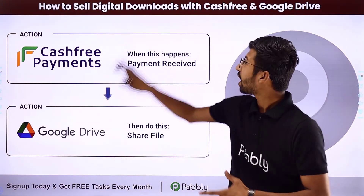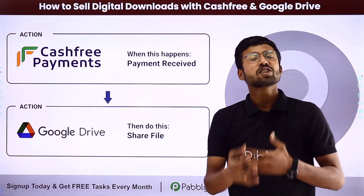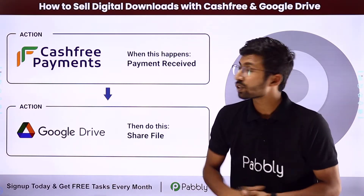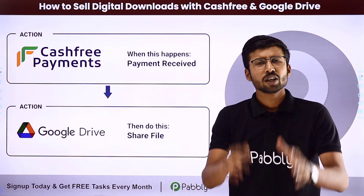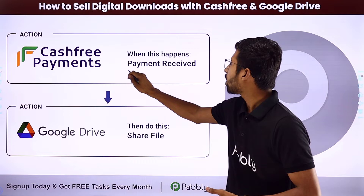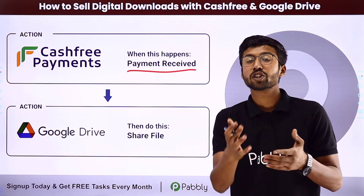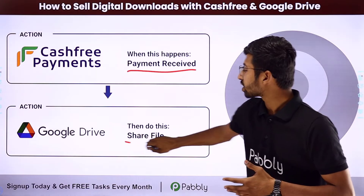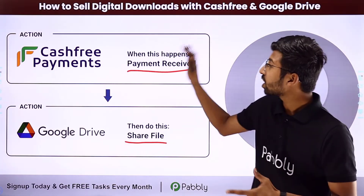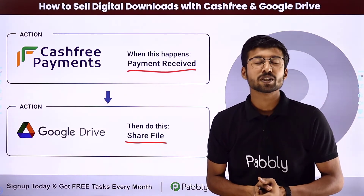In this video, we will learn how to sell digital downloads with Cashfree and Google Drive. Suppose you are selling some kind of online course file and you are using Cashfree as a payment method to collect payment. Using this automation, whenever you receive a payment on your Cashfree account, automatically the course file will be shared from your Google Drive to the customer who made the payment. This is a complete automation. How can you set up this automation for your business?